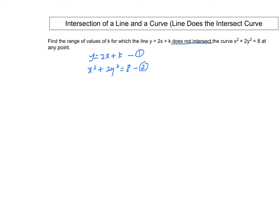Now, solving these two equations, we substitute equation 1 into equation 2. We will have x² + 2(2x + k)² = 8.